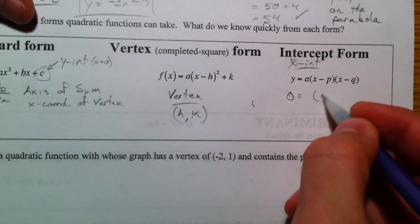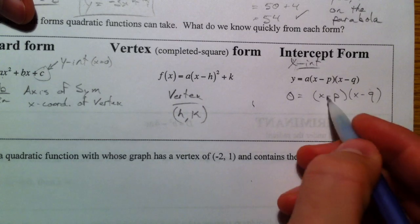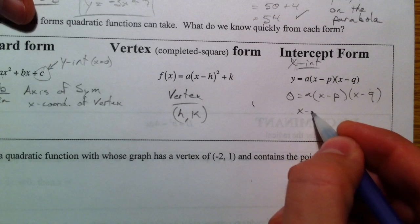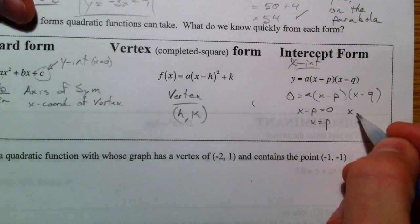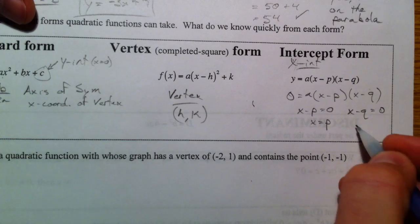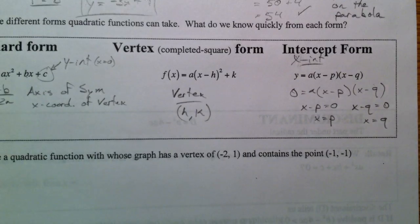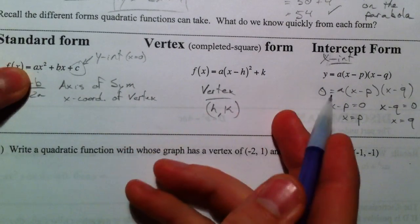If y equals 0, x minus p, x minus q, either one of these had to equal 0, because a wouldn't be 0. So x minus p would equal 0, so x would equal p, and x minus q would equal 0, so x would equal q. The other thing is a is always the same. It was always the multiplier, the vertical stretch.